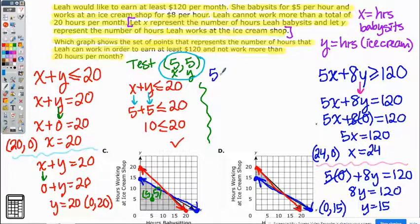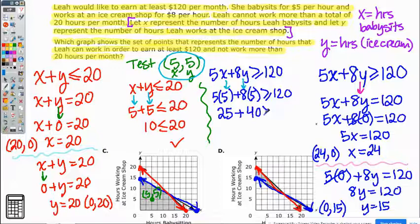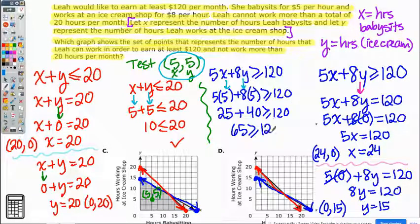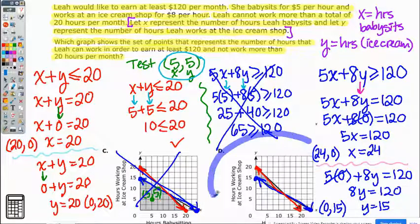Let's go to the blue one. 5x plus 8y has to be greater than or equal to 120. Then I'm going to take the time again to plug in my numbers here. 5 times 5, 8 times 5. 5 times 5 is 25. 8 times 5 is 40. And then you get 65 is greater than 120. 65 is not greater than 120. So that means automatically C is incorrect because 5, 5 did not work for both of them, which means that D was your correct answer for this one.